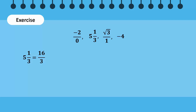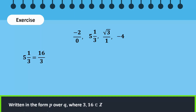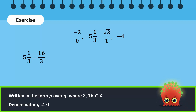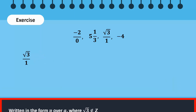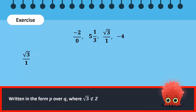5⅓ is a mixed fraction. We can simplify it to 16/3 so that it's in the form P/Q. Since 3 and 16 are both integers and the denominator is not 0, we can conclude that 5⅓ is a rational number. The square root of 3 over 1 is written in the form P/Q, but √3 is not an integer. So, this number does not belong to the set of rational numbers.